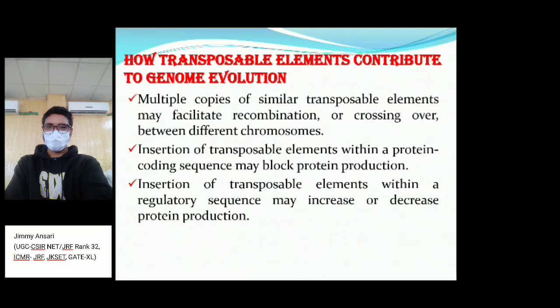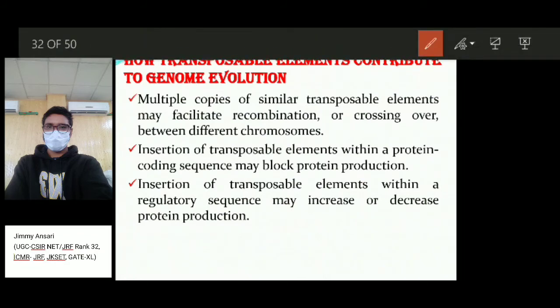How do retrotransposable elements contribute to genome evolution? Transposons are the major drivers of genome evolution. Multiple copies of similar transposable elements may facilitate recombination or crossing over between different chromosomes. Transposable elements make their copies through the copy-and-paste retrotransposon process. Insertion of a transposable element within a protein-coding sequence may block protein production.